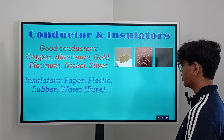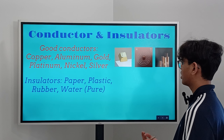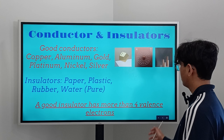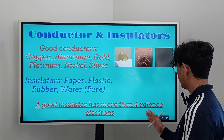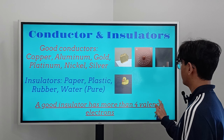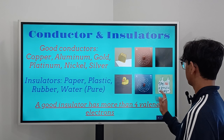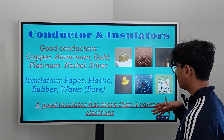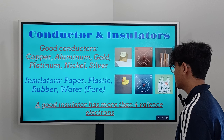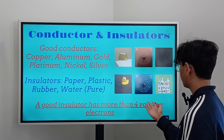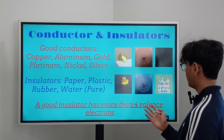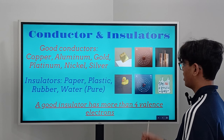Some good insulators are paper, plastic, rubber, and pure water. A good insulator has more than four valence electrons. Here are some examples of insulators: a rubber duct, argon, and a plastic bag. If any insulator has more than four valence electrons, it is considered a good insulator, and anything less than four valence electrons can be considered a good conductor.